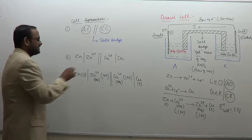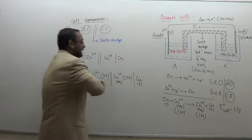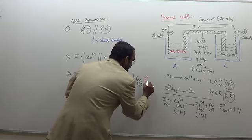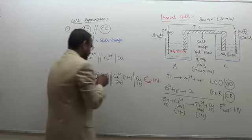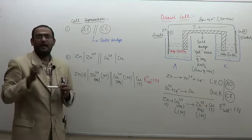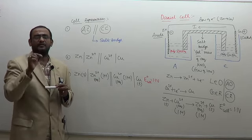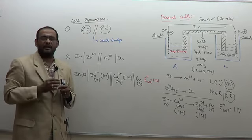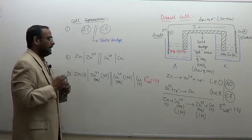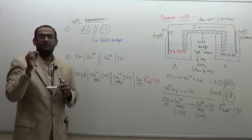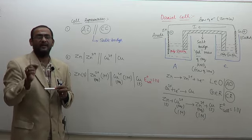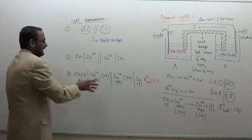We should also express the corresponding EMF value. The standard EMF, denoted E° of this cell, is equal to 1.1 volt. E° is the EMF measured at standard conditions: concentration of 1 molarity, pressure of 1 bar (for gaseous systems), and temperature of 25°C, which is 298 Kelvin. That is about the representation of the Daniel cell.